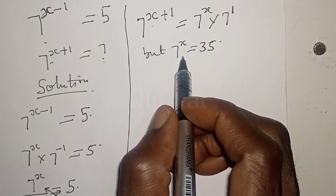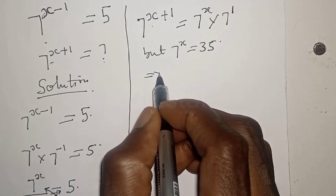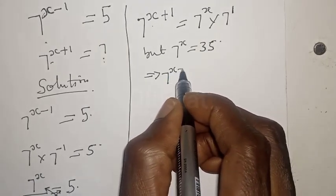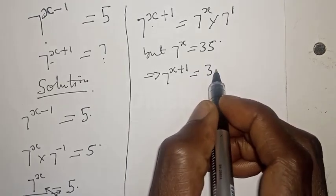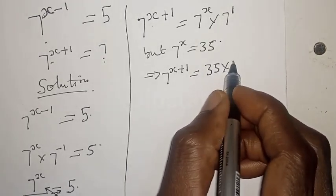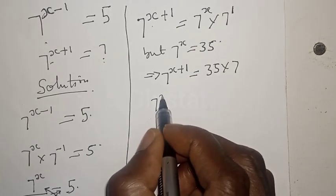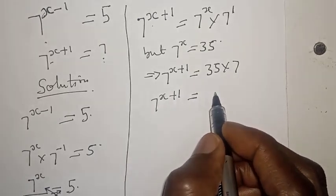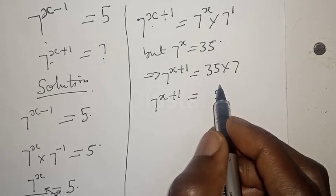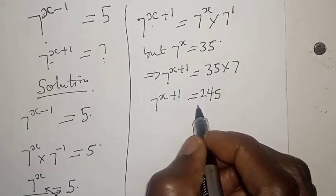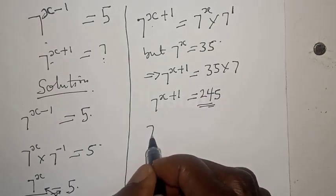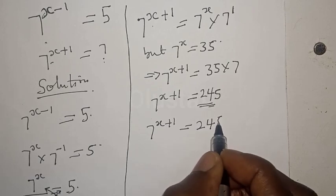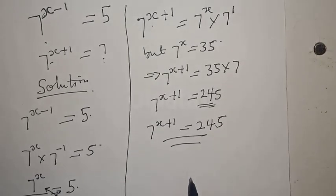But 7 raised to power x is equal to 35. So substituting, 7 raised to power x plus 1 is equal to 35 multiplied by 7. That is 7 times 35, which equals 245. Therefore, 7 raised to power x plus 1 is equal to 245.